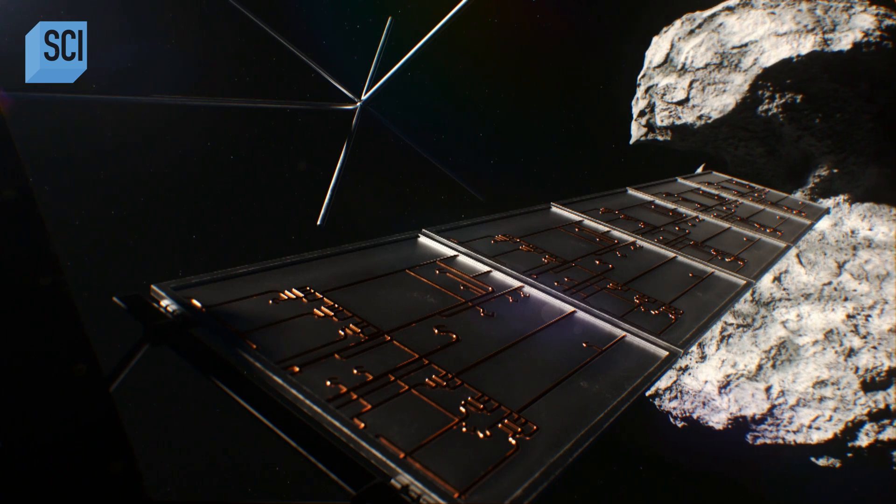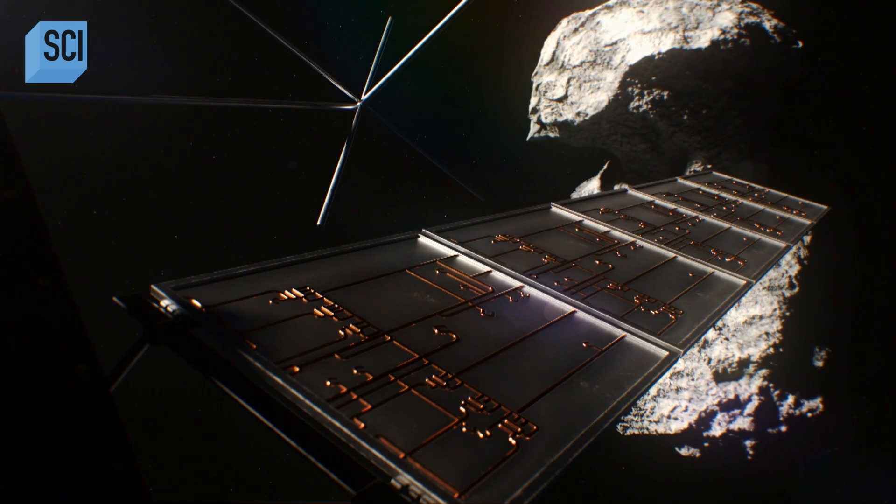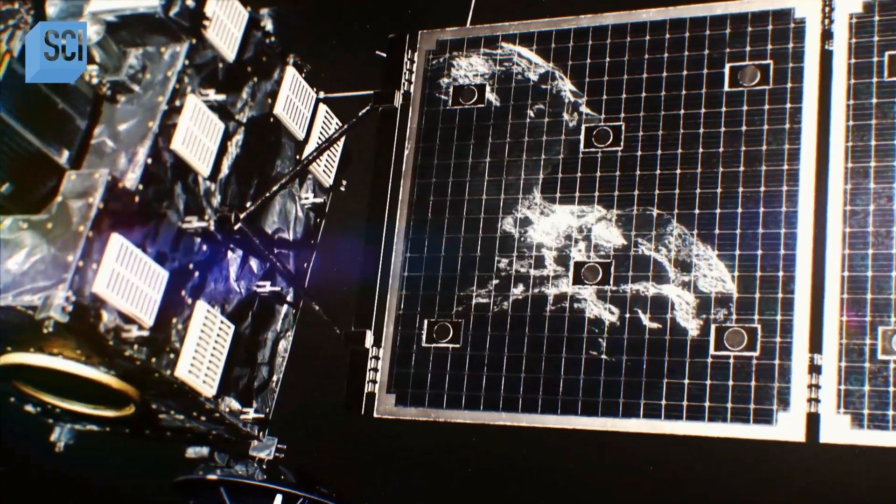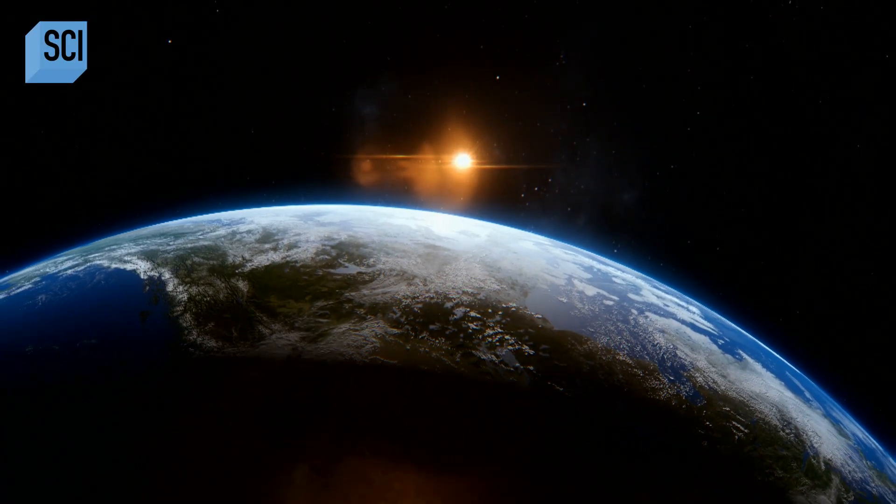With one mystery solved, Rosetta began to investigate the chemical makeup of 67P. The little comet could answer one of the biggest questions in planetary science. From where did our blue planet get its water?